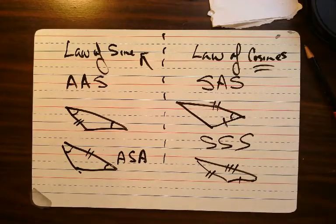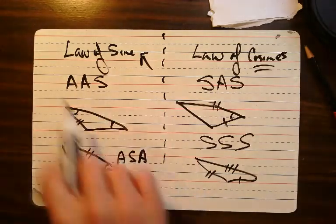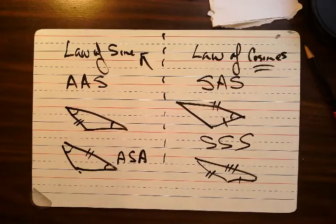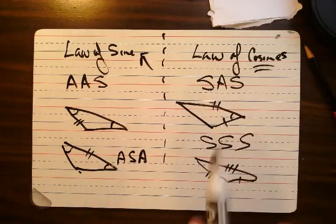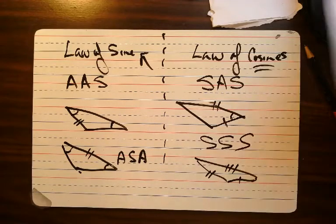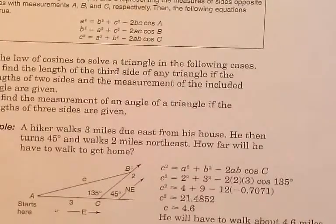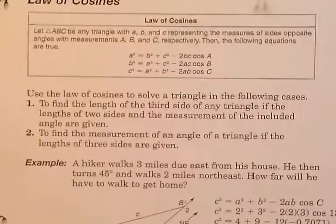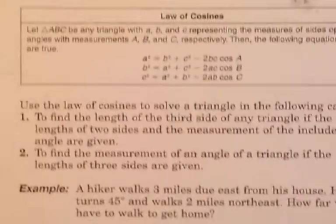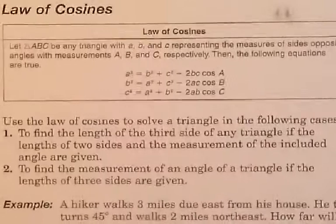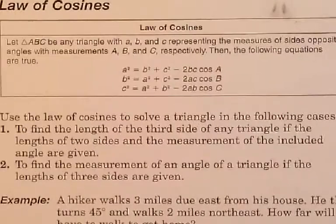Those are the deals. If I know more angles than I do sides, use the law of sines. If I know more sides than I have angles, use the law of cosines. So what the heck is the law of cosines? Well, it's like the Pythagorean theorem. Remember, the Pythagorean theorem says a squared plus b squared equals c squared? But the Pythagorean theorem only works on right triangles. The law of cosines works on everything.